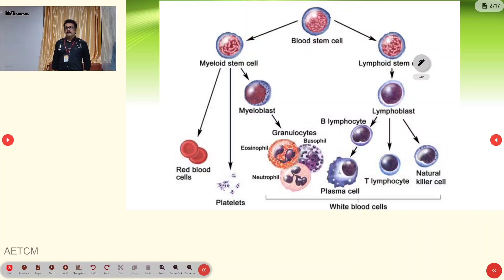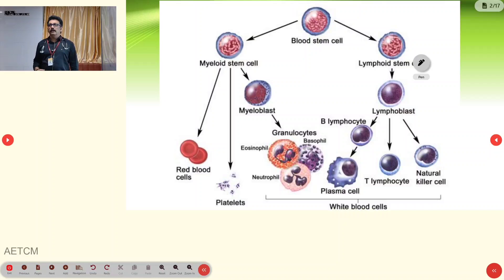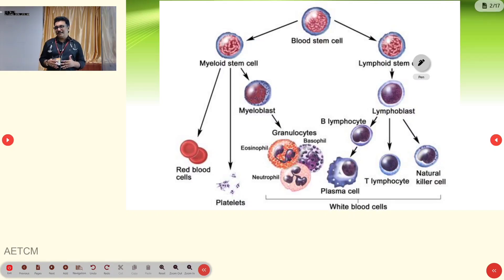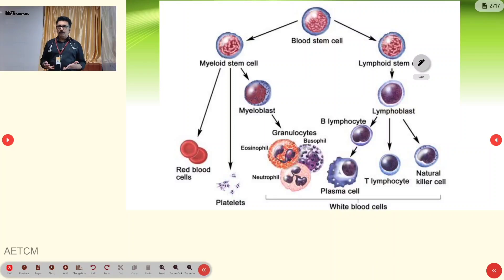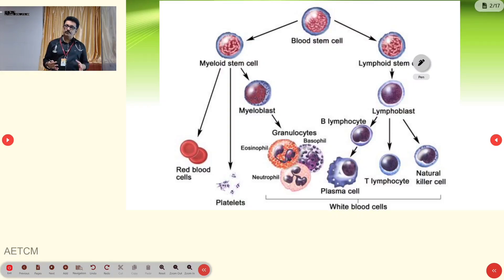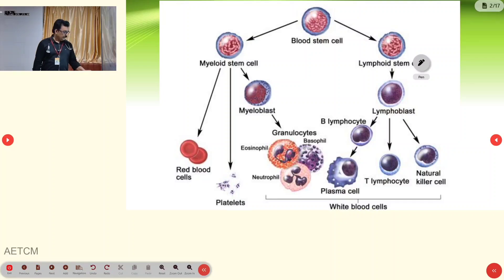We all know that from our blood stem cells, the RBC, WBC, and platelets will all be produced. The main function of WBC cells is to protect our body from infection and inflammation. They produce inflammation against an organism to try to kill organisms which are entering into our body.